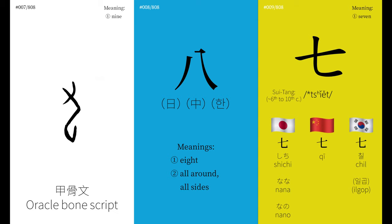For the character 9, we know that it began as this symbol. Some think that it is depicting a hook. Because hook sounded similar to 9 in ancient Chinese, the symbol gradually came to mean 9 instead.